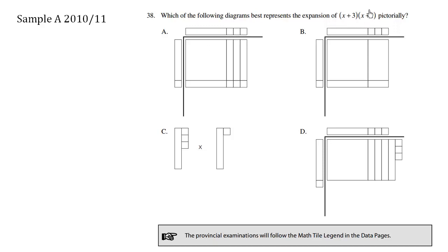And the other factor is x plus 1. So this here — this stick is a positive x, and a positive 1 is a white square.